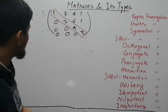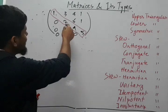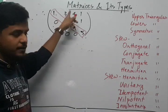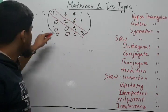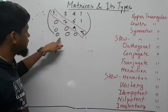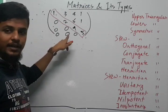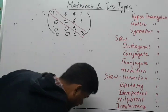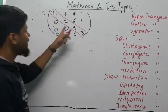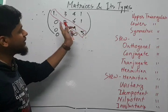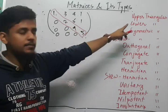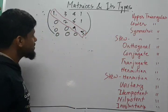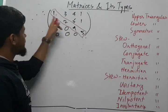The lower triangular matrix is the opposite: all the elements above the leading diagonal will be zero, while the elements below the leading diagonal will not necessarily be zero. That kind of matrix is known as the lower triangular matrix.